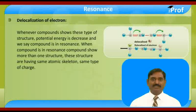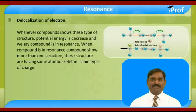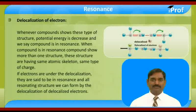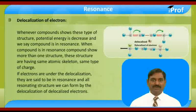When a compound is in resonance, it shows more than one structure. These structures have the same atomic skeleton and the same type of charge. If electrons are under delocalization, they are said to be in resonance, and all resonating structures can be formed by delocalization of delocalized electrons.